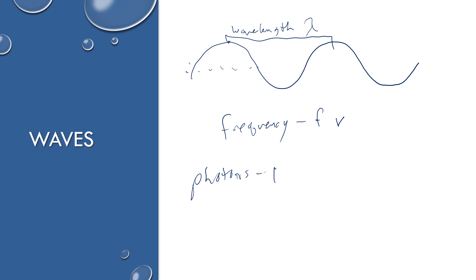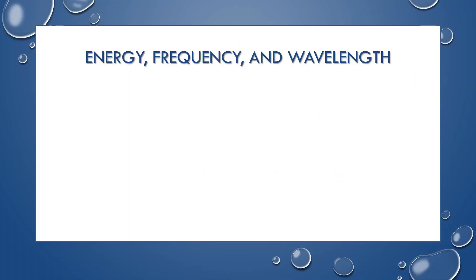Light also travels as photons, which are discrete packets of light energy — essentially light particles. One of the interesting things about electromagnetic radiation is this wave-particle duality: sometimes you think of it as individual photons or particles, and other times you think about it as waves with wavelength, frequency, and energy. We'll use both perspectives in this course.